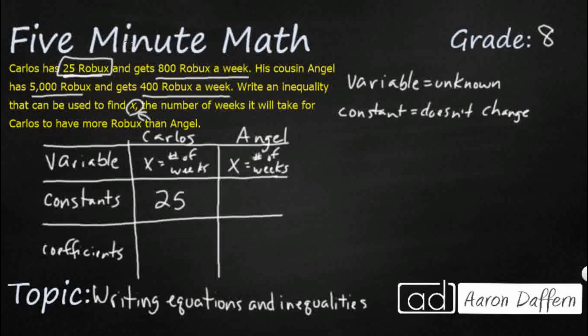Angel has a constant. He has 5,000 Robux. Look how different that is. So his starting amount doesn't change. If we're thinking of like a slope intercept form, right, these would be the Y intercepts. These would be the ones that are not attached to a variable because that's what a coefficient is. A coefficient is attached to a variable or changes the variable.